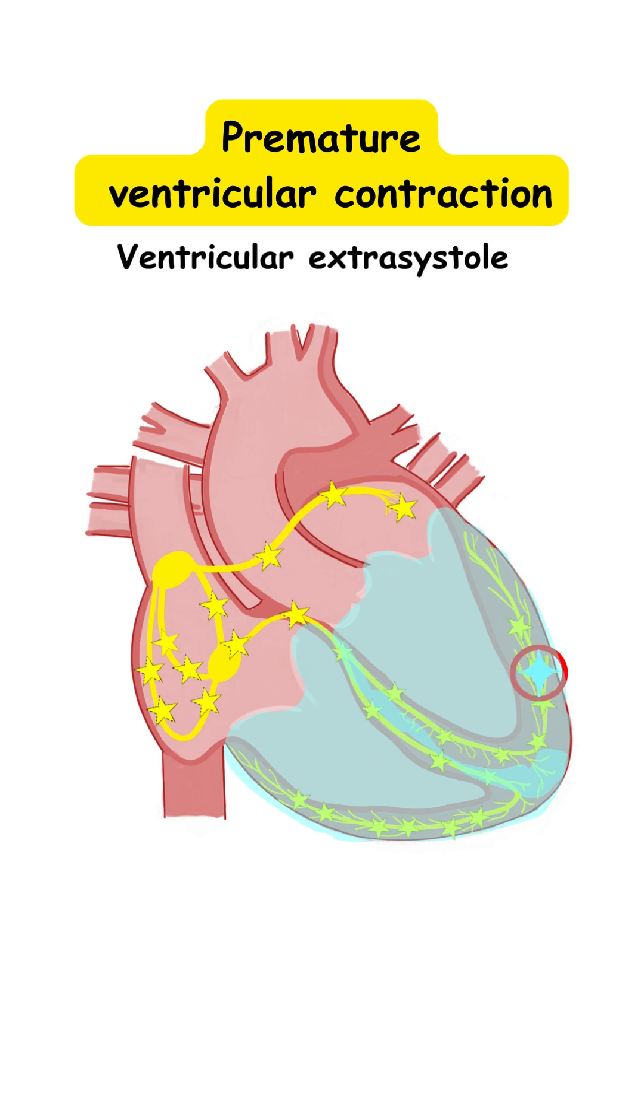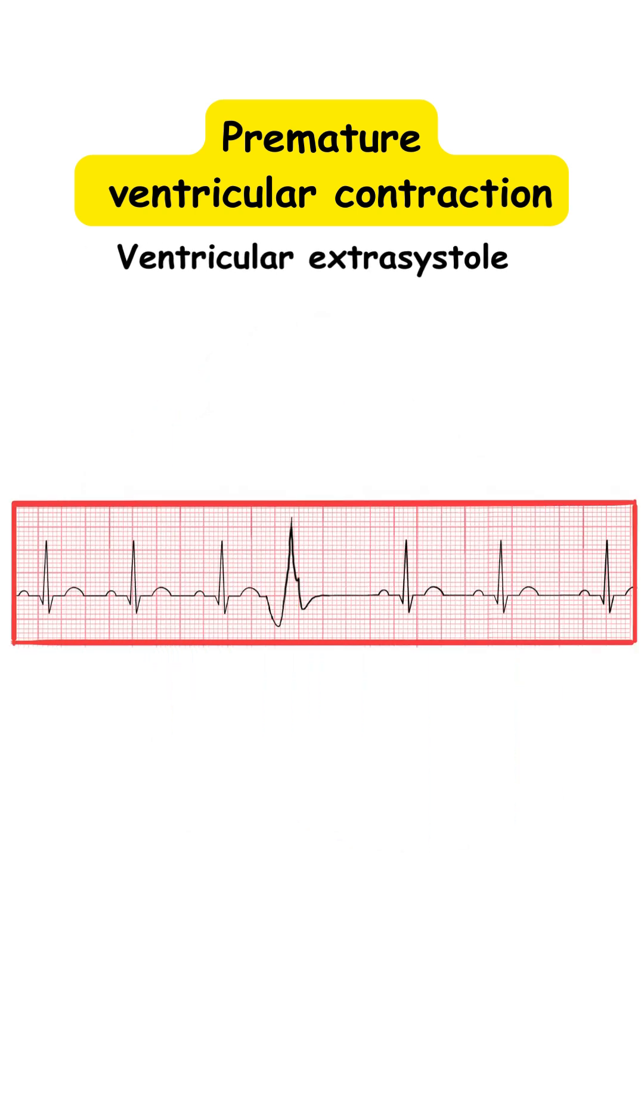This premature ventricular contraction on the ECG is going to be recorded as a QRS complex with a bizarre morphology that is popping out of nowhere. Why?